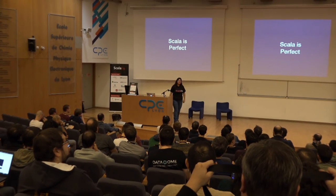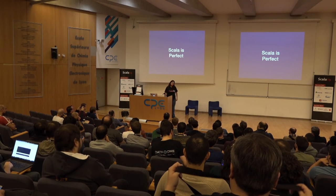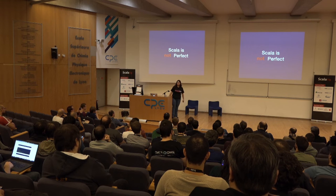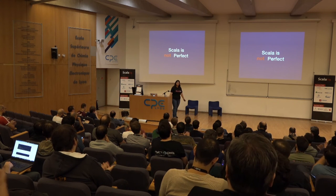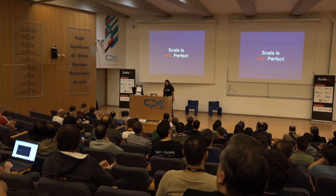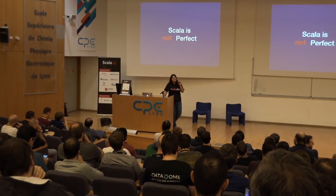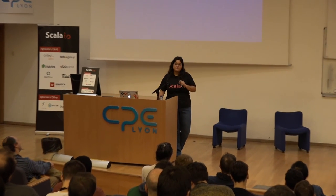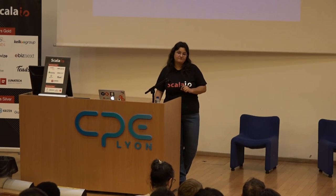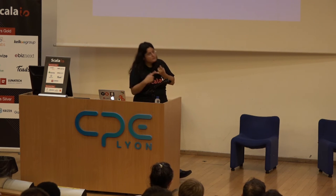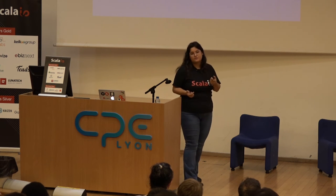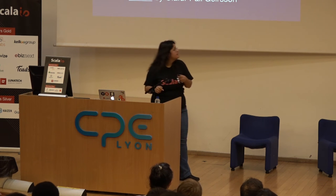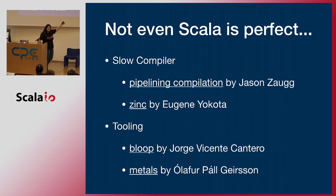But the entire point of this talk is: every time somebody tells you something is perfect, what are you hiding from me? Of course Scala is not perfect. I can bet I can ask each and every one of you what you don't like about Scala and everybody is going to say something different. My personal things are that the compiler is slow and the tools, in particular if you do hard-core functional programming, are really not that great. It turns out that the Scala Center is working really hard on all of this.